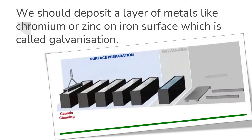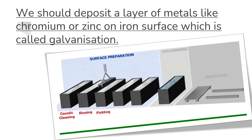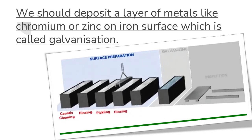Now I am going to explain my third slide, which is about the galvanization process. We should deposit a layer of metals like chromium or zinc on the iron surface, which is called the galvanization process. It protects iron from rust.